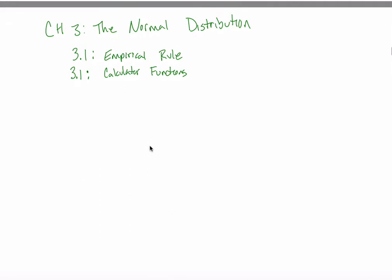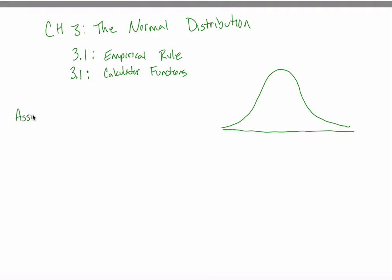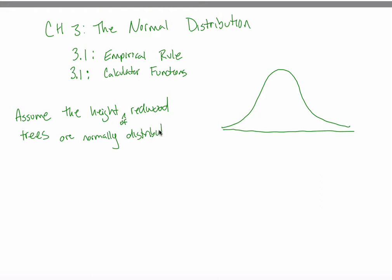What questions are you answering? That's what I want to get into in this video. I'm not actually going to show you the empirical rule or calculator function just yet — I'm just going to talk, generally speaking, about the types of questions that we will see and how you'll be able to use these things to answer them. So let me start out with the picture. You're going to be drawing a lot of this picture — distributions that have this symmetric bell shape. Assume the height of redwood trees are normally distributed.